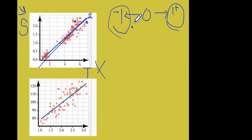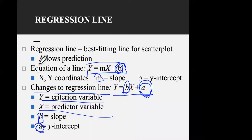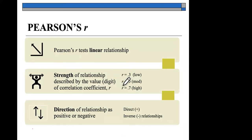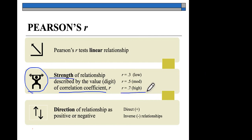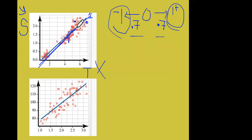What we're trying to determine is the distance between each data point and the regression line. In the stronger example, the distance is much less — points are very close to the line. In the weaker example, data sets are farther away from the line. The closer the data points are to the regression line, the stronger the relationship. The stronger the relationship, the closer the correlation coefficient is to positive or negative one.